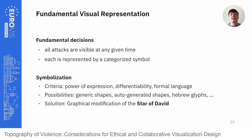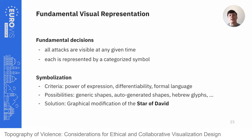We approached the challenge of symbolizing each single act of violence. We made two fundamental decisions: all attacks are visible at any given time, and each is represented by a categorized symbol. We defined three criteria to evaluate potential symbol solutions: first, power of expression — all symbols must have equal power of expression and thematic symbols must not be used as generic shapes; second, differentiability — all symbols must be easily distinguishable from each other; and third, form a language — all symbols must appear in an equal and fitting graphic style. Rejected options included generic shapes (too arbitrary), auto-generated shapes (too complex), and Hebrew glyphs — which appeared to convey meaningful symbolization but were clearly rejected by experts and Jewish collaborators.